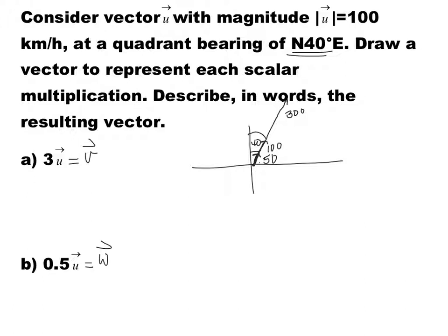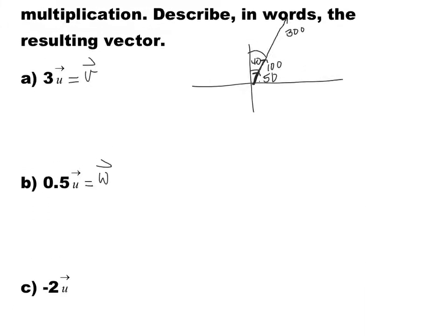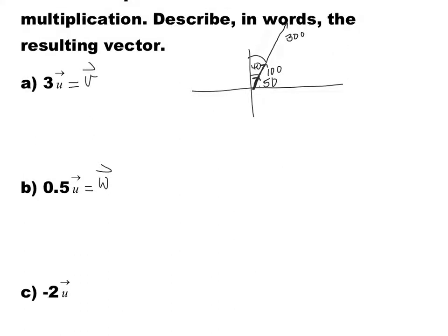And the last one is going to be negative 2U. If this vector from here to here is 100, that's our original vector, then negative 2U is going to be 200, but in opposite direction. So if this is vector Z, it's going to be 200 kilometers per hour, and it's going to be in the opposite direction.